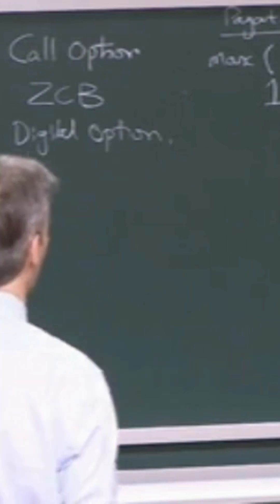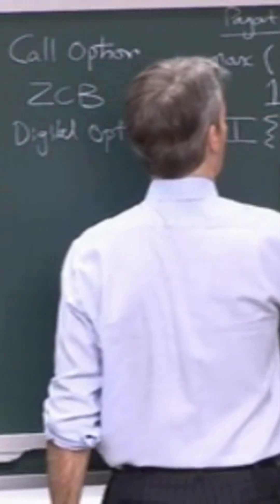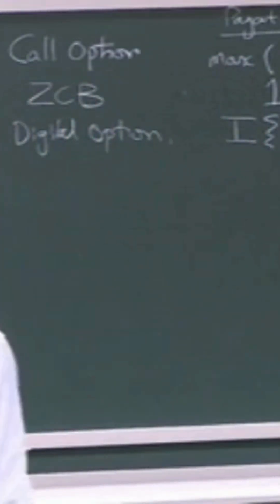And then the digital option is just the indicator function of S,T being greater than K.